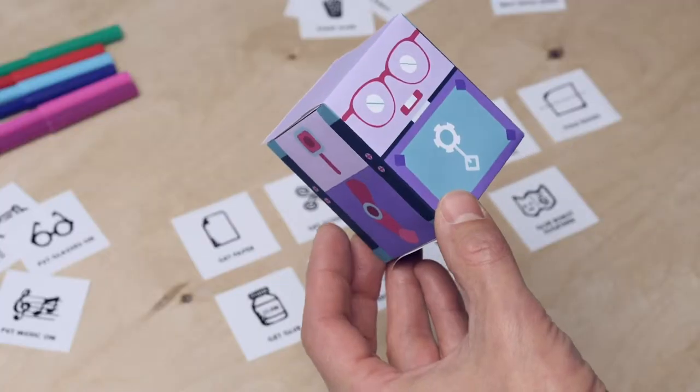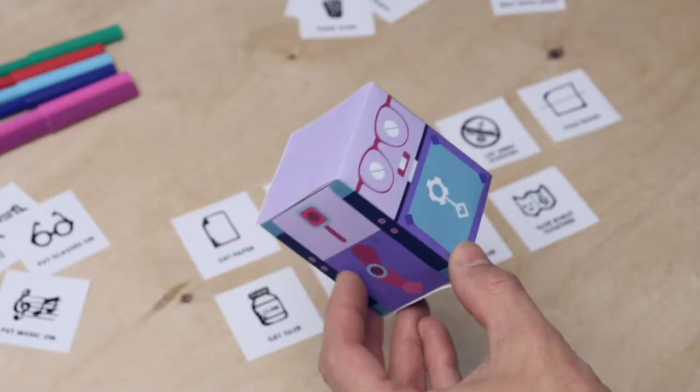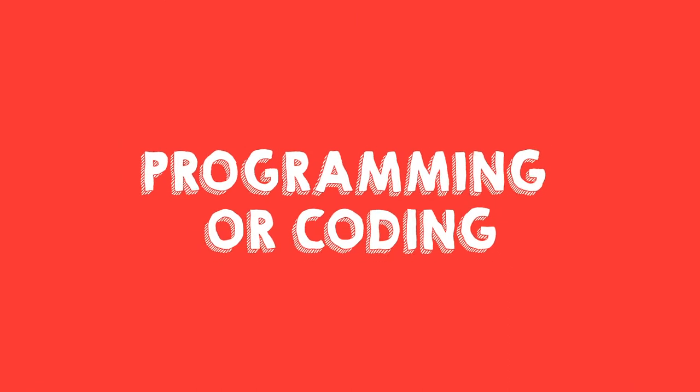In order to make a robot do what you want him to do, you will have to tell him exactly what to do. We call this programming or coding.